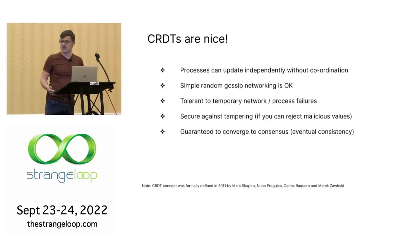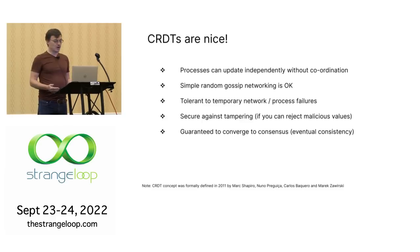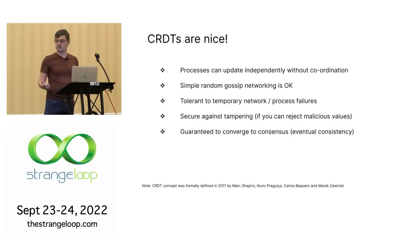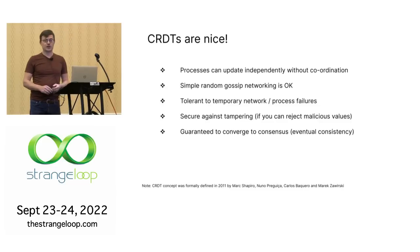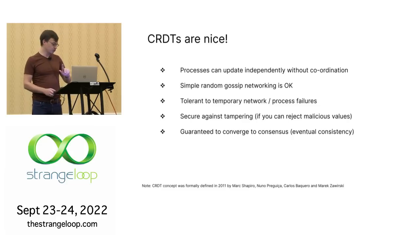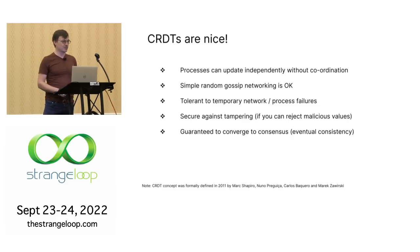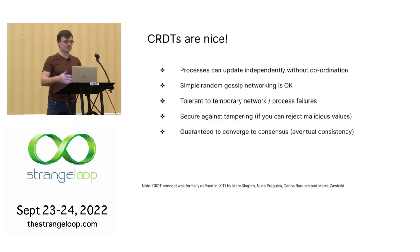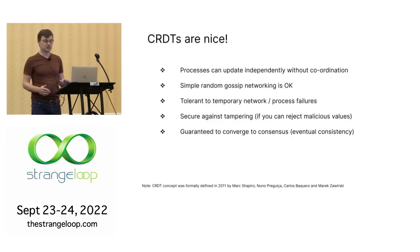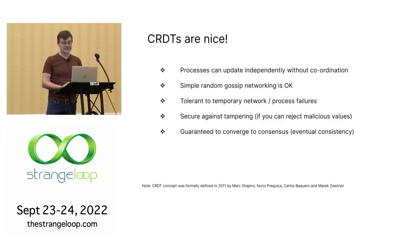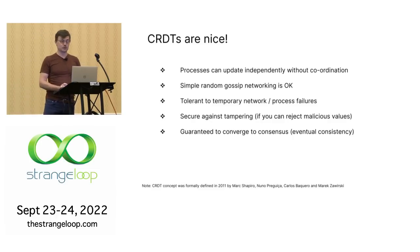Simple random gossip networking is sufficient. It doesn't matter if you lose some temporary network connections or don't talk to everyone — it recovers from temporary failures very well. It's also secure against tampering, with one proviso: you have to be able to reject a bad value. If someone puts a million in your system, you have to have a way of knowing that's a bad value, otherwise it's going to mess up your consensus. But as long as you can do that, it's pretty secure and is guaranteed to converge to eventual consistency.